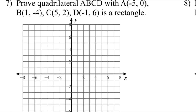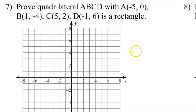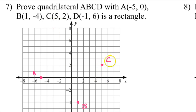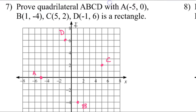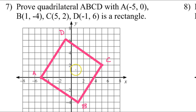Let's start by graphing the quadrilateral to get a bird's eye view. Negative five comma zero is point A, and one comma negative four is point B. Then we have five comma two — that's point C. And then we have negative one comma six for point D. Here's a nice picture of the quadrilateral.